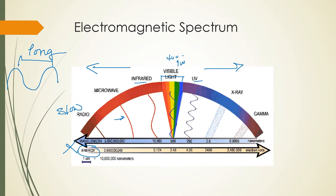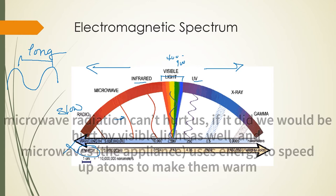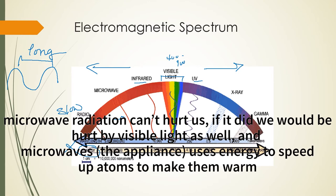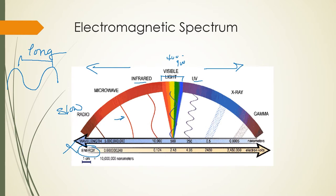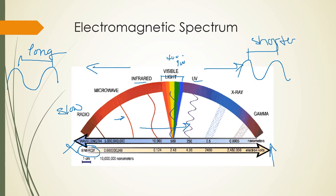Radio waves don't hurt us — we don't feel them moving through us and we are actually in radio wavelengths all the time. Microwaves don't actually hurt us. Infrared does not hurt us, though we feel it as warmth. Visible light does not hurt us. As we move toward the higher energy side, we get progressively more squiggly waves. We start with UV — even though we can't physically see it, it can harm us and gives us sunburn, which is why we wear UV protection.